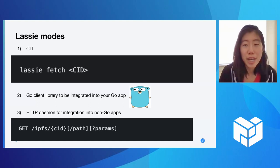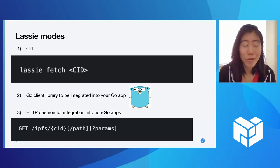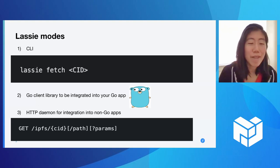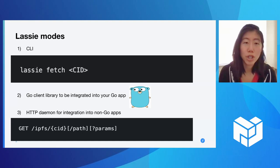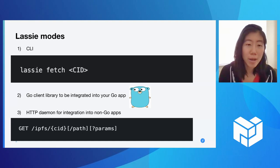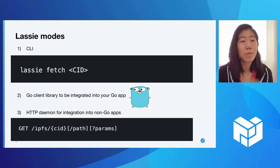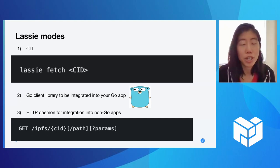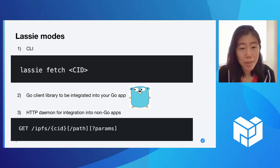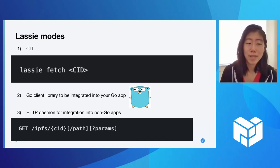You insert your CID and it returns your content in CAR file format. That's the CLI. You can also use the Go client library, which can be integrated directly into your Go app. There's also an HTTP daemon for integration into non-Go apps, and we'll talk about that a little bit more later.